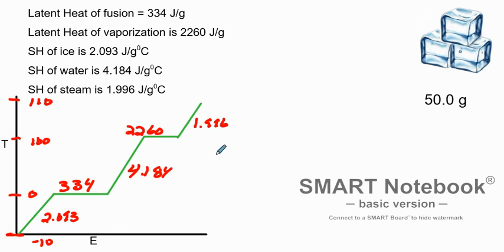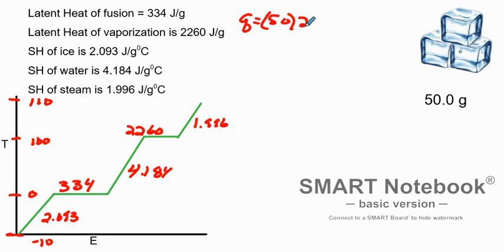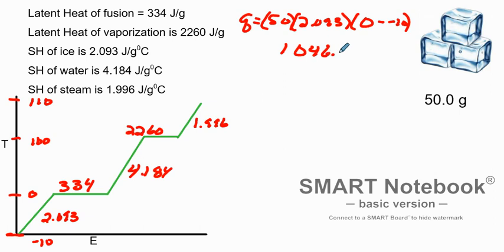For 50 grams of ice when we're warming it up, we use q equals mass times specific heat times temperature change. So q equals 50 multiplied by the specific heat of ice, 2.093, multiplied by the temperature change: t2 minus t1, which is zero minus negative 10. We get 1046.5 joules.